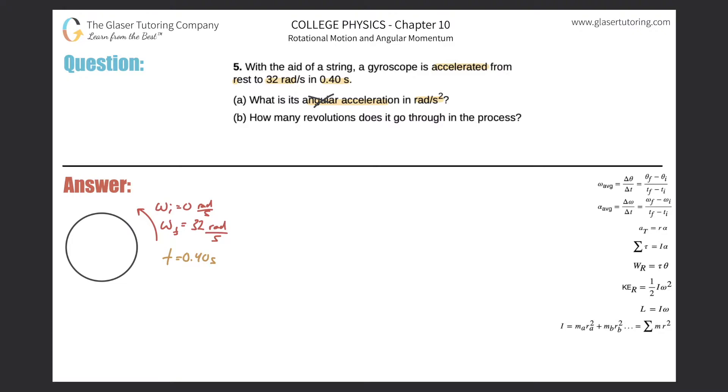They're telling us that this gyroscope accelerated from rest, or zero velocity, to 32 radians per second. That is an angular velocity, but you can just think of that as a linear velocity in terms of trying to identify what equation to use.